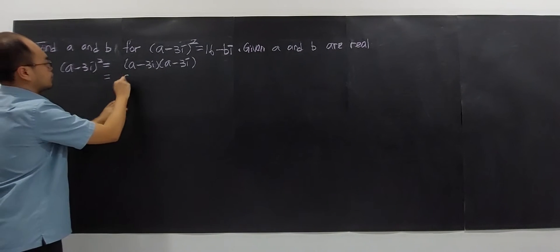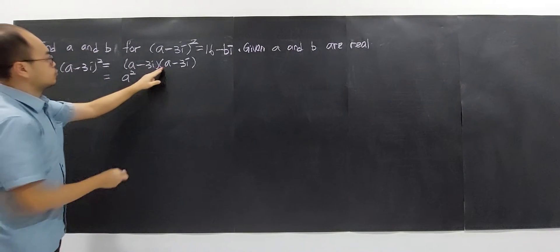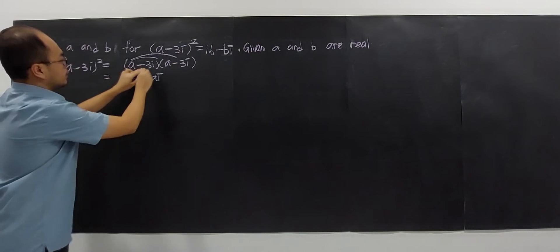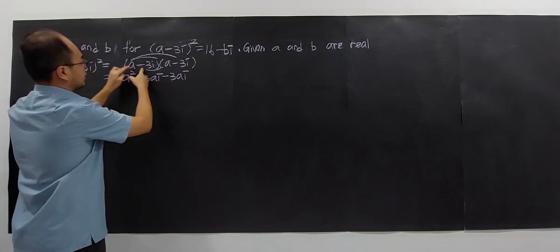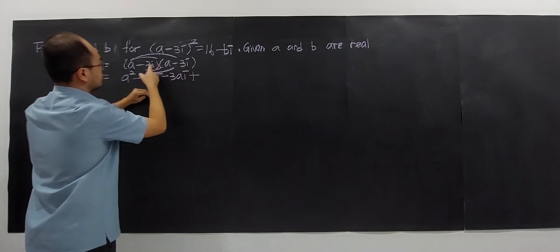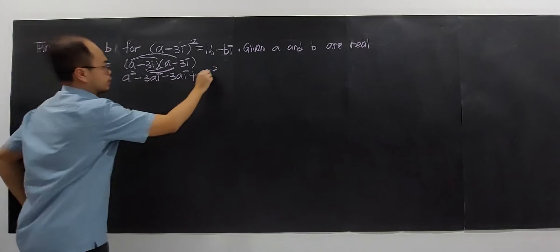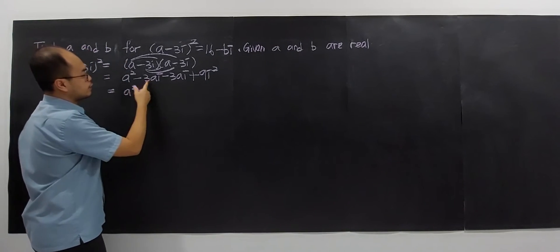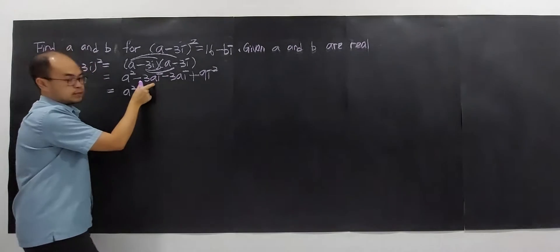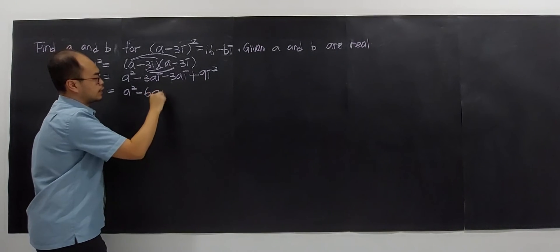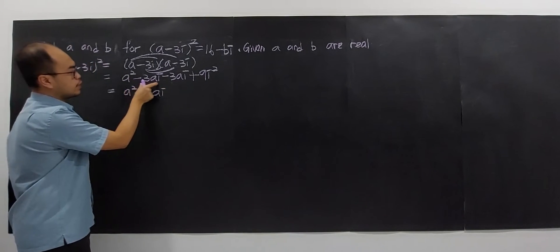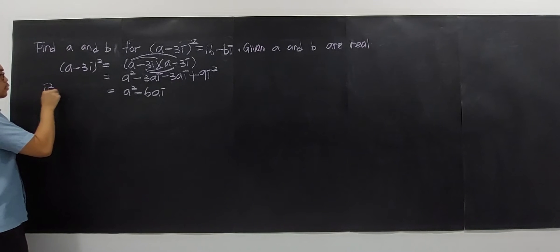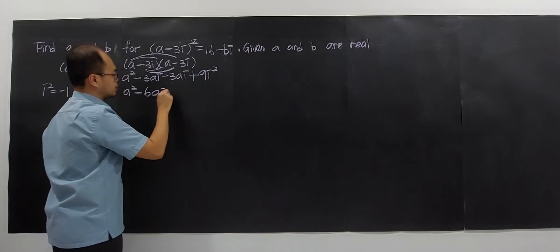Do it slowly. A times A gives A squared. Then negative 3ai, and another negative 3ai — these two are like terms, giving negative 6ai. Then negative 3 times negative 3 gives positive 9i squared. Since i squared equals negative 1, the 9i squared becomes negative 9.